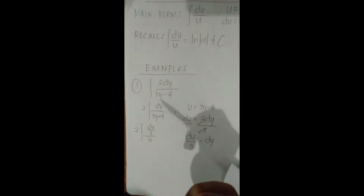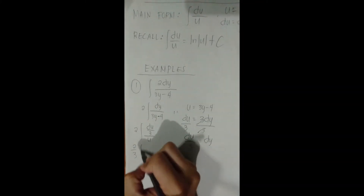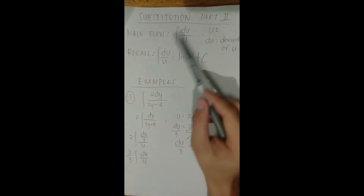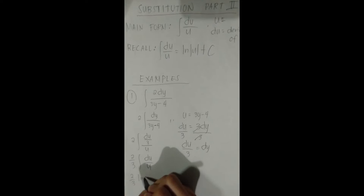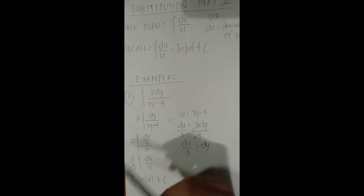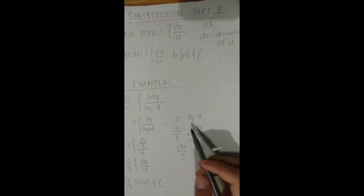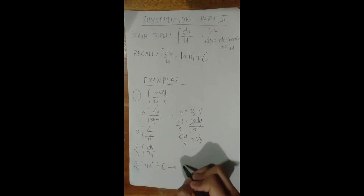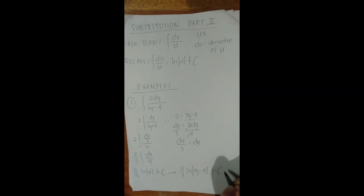We have another constant 1/3 inside, so we pull it out. It multiplies with 2 to give 2/3. The expression becomes (2/3) · integral of du/u. This is already in the standard form, so the integral of du/u is ln|u|. Therefore the result is (2/3) ln|u| + C. Bringing back the original function by replacing u with 3y − 4, the final answer is (2/3) ln|3y − 4| + C.